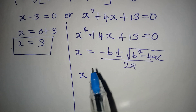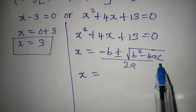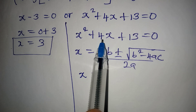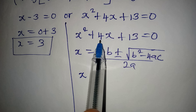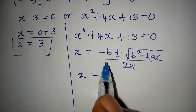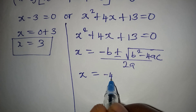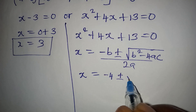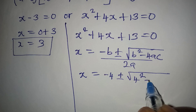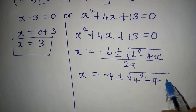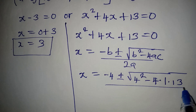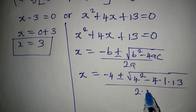Identifying our coefficients: a = 1 (coefficient of x²), b = 4 (coefficient of x), and c = 13. Substituting: x = (-4 ± √(4² - 4·1·13)) / (2·1).